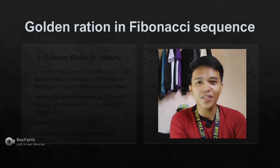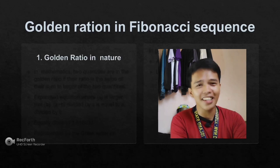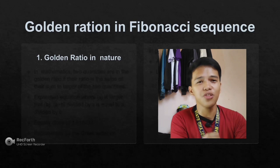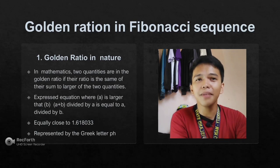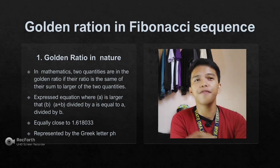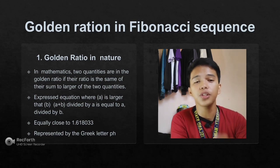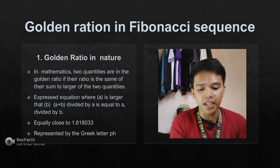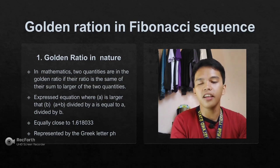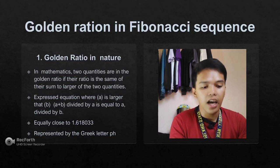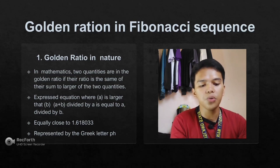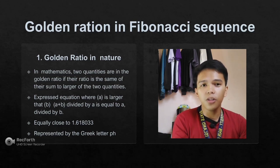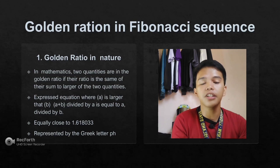There is also another offshoot of the Fibonacci sequence: the golden ratio in nature. In mathematics, two quantities are in the golden ratio if their ratio is the same as the ratio of their sum to the larger of the two quantities. This golden ratio is also expressed as an equation where A is larger than B.